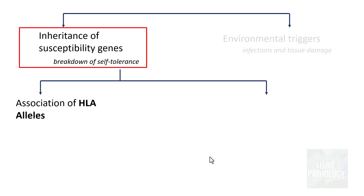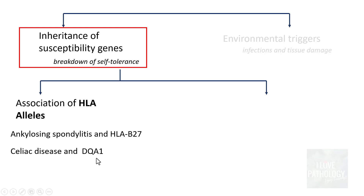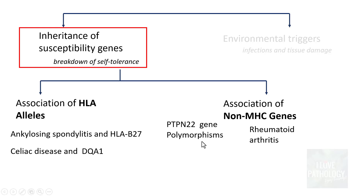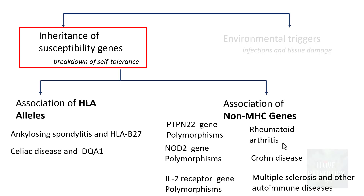The genes involved can be classified into two groups. First, HLA allele associations — most importantly HLA-B27 and ankylosing spondylitis, and HLA-DQA1 and celiac disease. Second, non-MHC gene associations — for example, PTPN22 gene polymorphisms associated with rheumatoid arthritis, NOD2 gene polymorphisms associated with Crohn's disease, and interleukin-2 receptor gene polymorphisms linked to multiple sclerosis and various other autoimmune diseases.